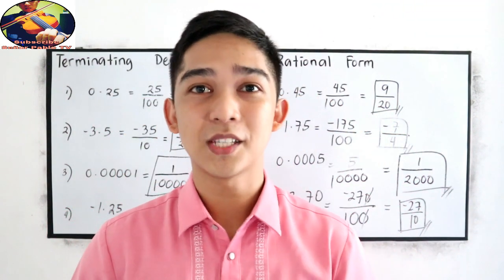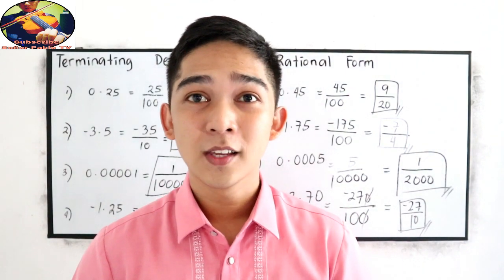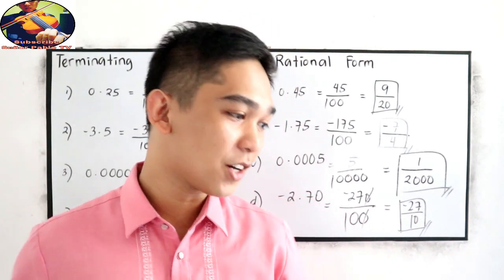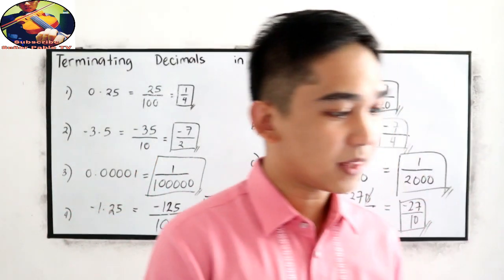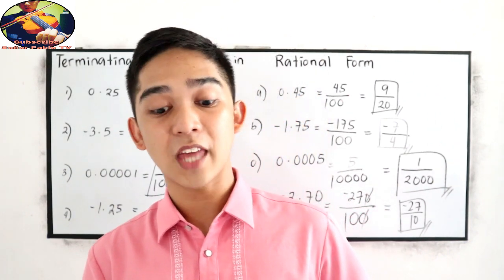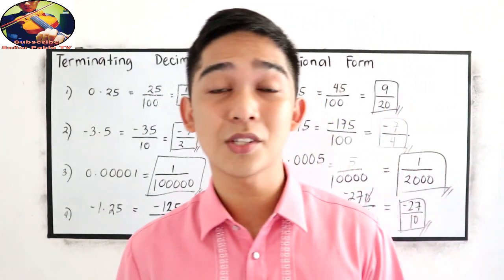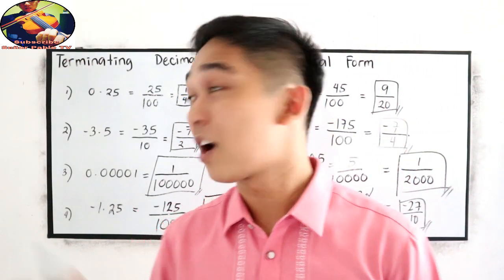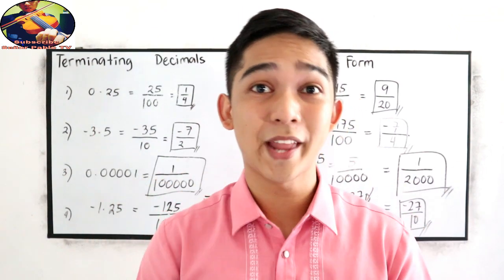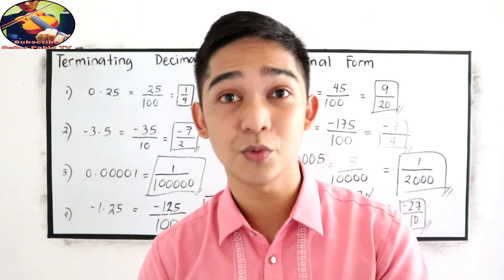Thank you for watching. And now, let us proceed in non-terminating and non-repeating decimals. Non-terminating and repeating decimals in rational form. Those are those numbers with bar in our decimal number. So kindly watch our next video. And also please share to your classmate and don't forget to subscribe. Bye-bye.